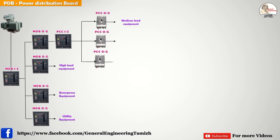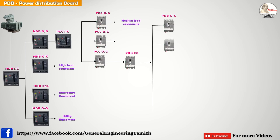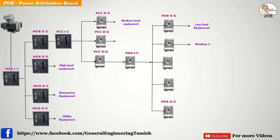From PCC, one spare feeder is available. From that, we connect the PDB (Power Distribution Panel) Incomer Breaker. From the Incomer Breaker, outgoing feeders are connected based on requirements. The loads connected to PDB are medium-level manifesting equipment and medium kilowatt equipment.